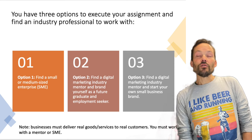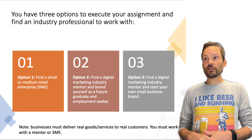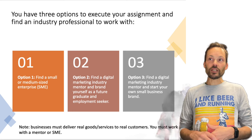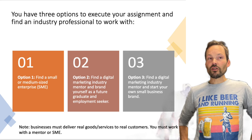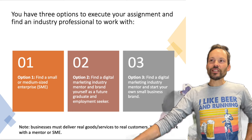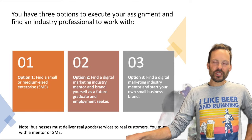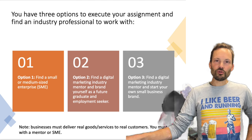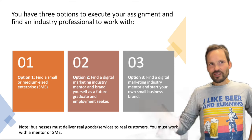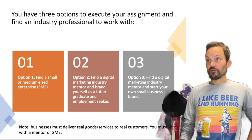If that doesn't appeal to you, you can find an industry mentor and brand yourself as a future graduate and employment seeker. You need to find someone currently working in digital marketing. The purpose of the industry mentor is not to mentor your assignment — it is to mentor you towards the industry. Option two is about you taking steps towards your future, thinking strategically about where you'll be after this course and after RMIT, moving towards that industry and that dream job.